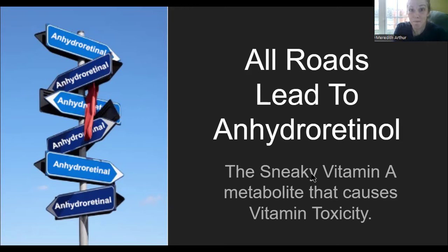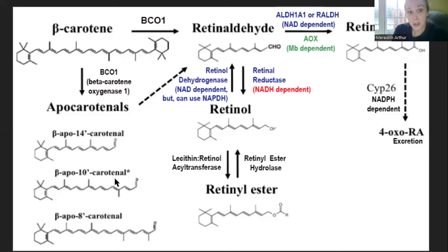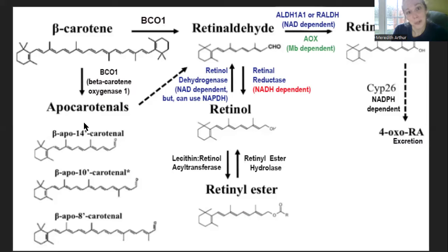I want to start with a little basic knowledge about vitamin A. We eat vitamin A in two different forms: beta carotene or retinol esters. There are also apocarotenoids we can get from our diet, and things like lutein and zeaxanthin. I'm going to look into those too, because some people don't tolerate lutein.